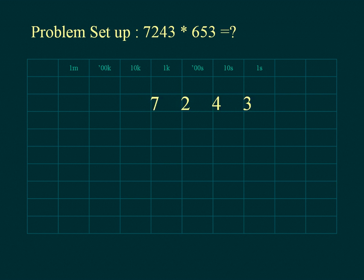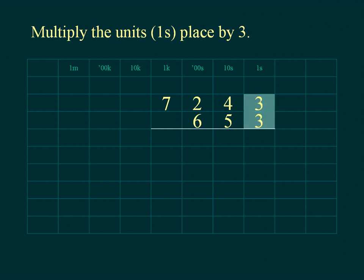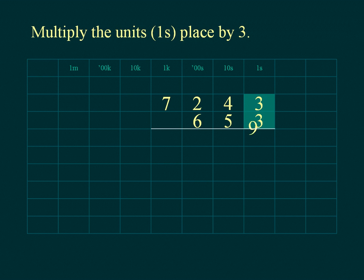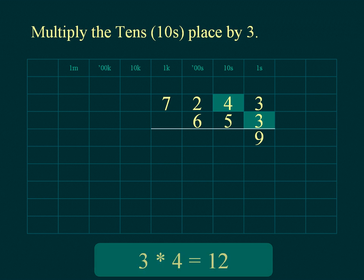Place the digits of the multiplicand above the multiplier so that the units line up. Multiply the units of the multiplicand and place the results below the line in the units place. Multiply the tens of the multiplicand; place the units of the result below the line in the tens place and place the tens of the result under the hundreds place.